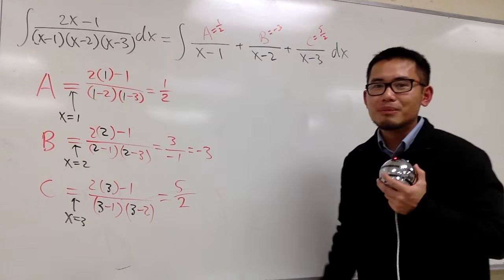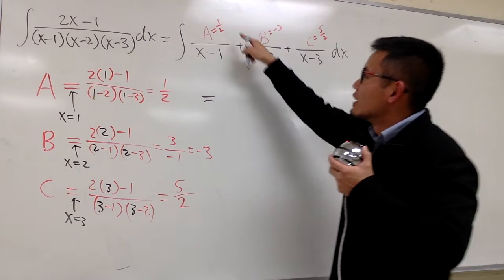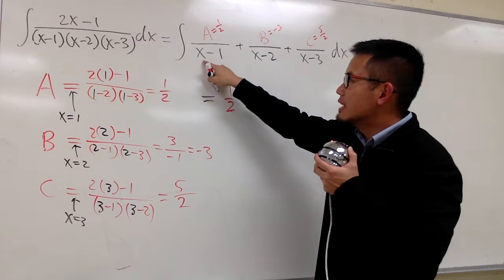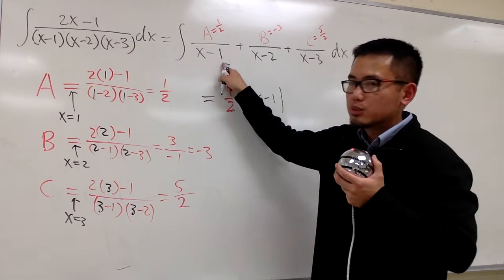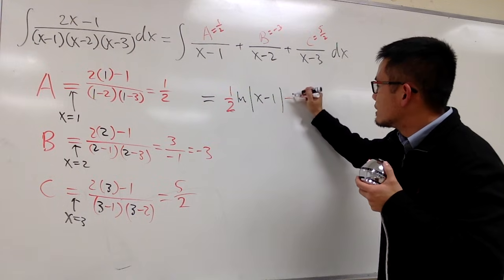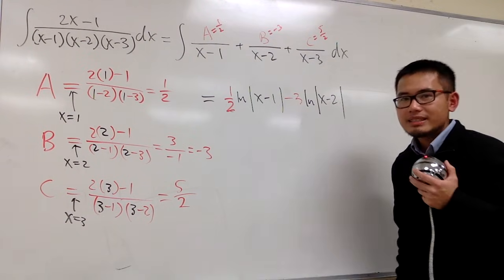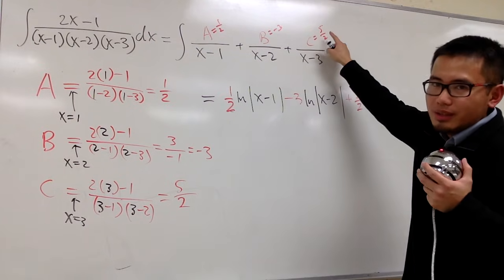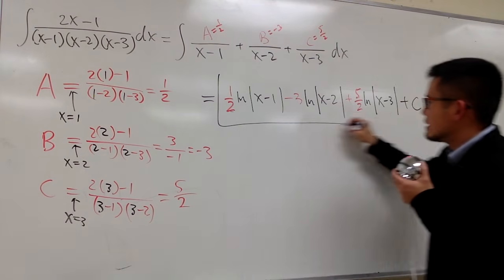Now let's put down the constant multiples and integrate. For the first term, one-half times the integral of 1 over x minus 1 gives us one-half times ln of the absolute value of x minus 1. Next, minus 3 times the integral of 1 over x minus 2 gives minus 3 times ln absolute value of x minus 2. And finally, plus 5 over 2 times the integral of 1 over x minus 3 gives plus 5 over 2 times ln absolute value of x minus 3, plus C.